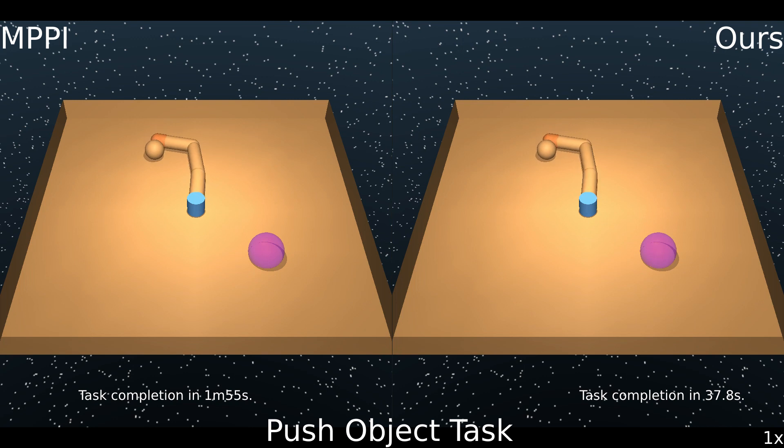The objective for this manipulation demo is for the three-link manipulator to move the sphere to the purple region. Here, in addition to the sparse quadratic cost on the sphere position, we are able to leverage a strength of sampling and introduce a binary cost to encourage contact with the spherical object.